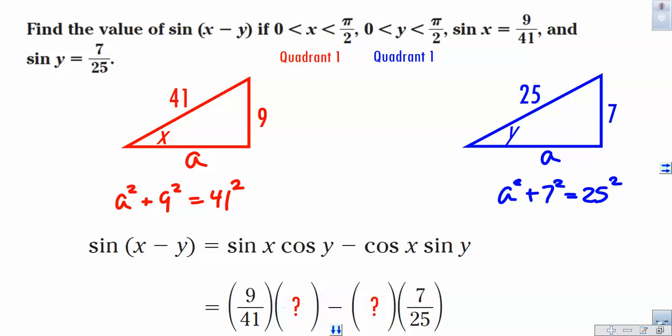So, if we square those numbers and then subtract 41 squared minus 9 squared, square root that value. Do the same thing over there. Square 25, that's 625, and then subtract 49, we get 576. Take the square root of that, and we end up finding out what a is. Great. Now that we know what those sides are, do you see now how it's possible to find the cosine of each one of those angles? Adjacent over hypotenuse.